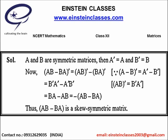Now we can apply another theorem for the transpose of matrix AB. The transpose of matrix AB equals the transpose of B times the transpose of A. Similarly, the transpose of matrix BA equals the transpose of A times the transpose of B. So the transpose of AB minus BA equals B dash A dash minus A dash B dash.